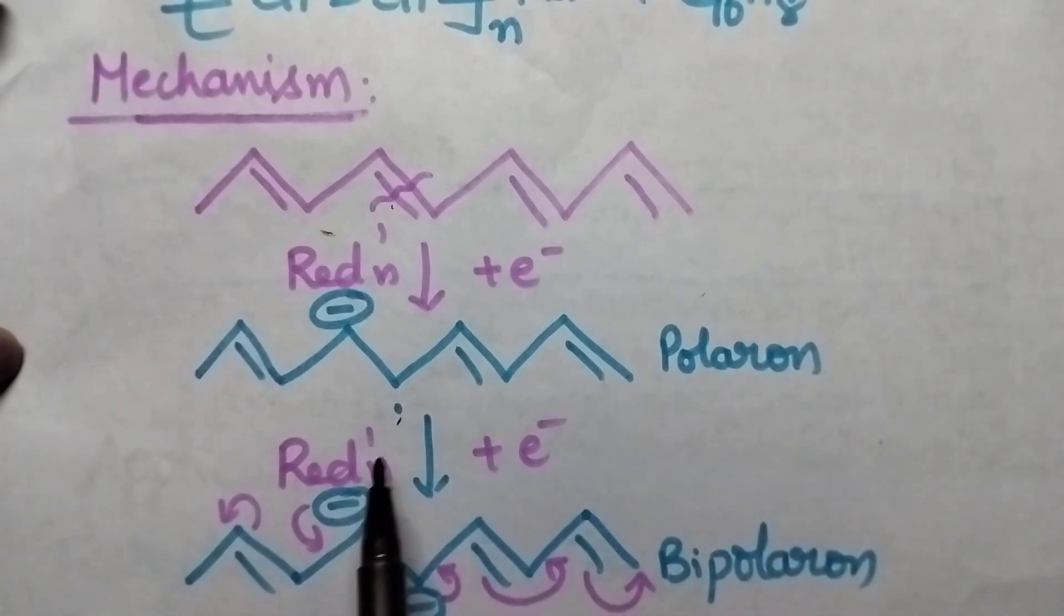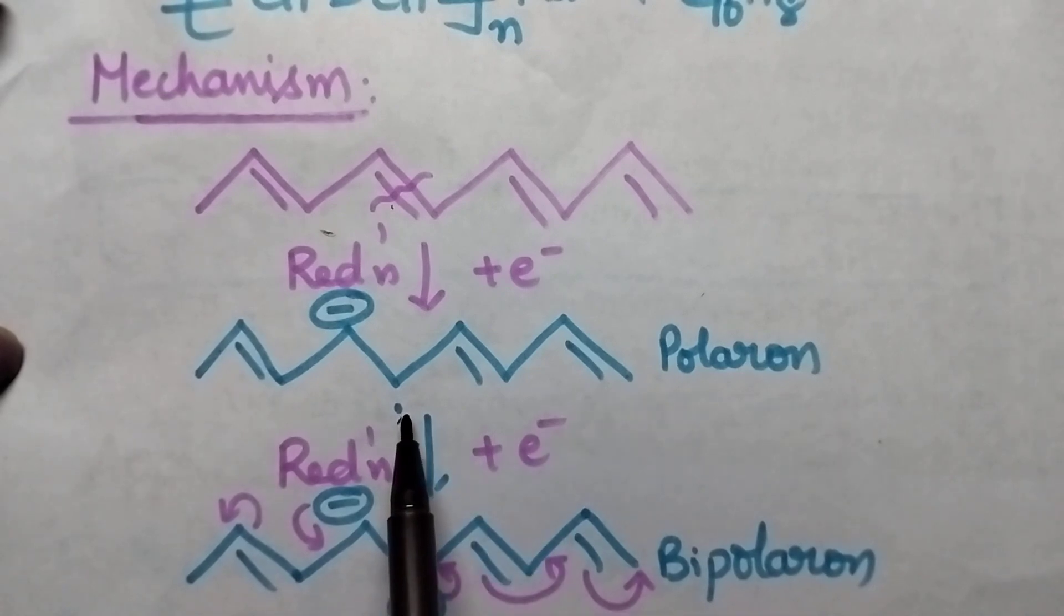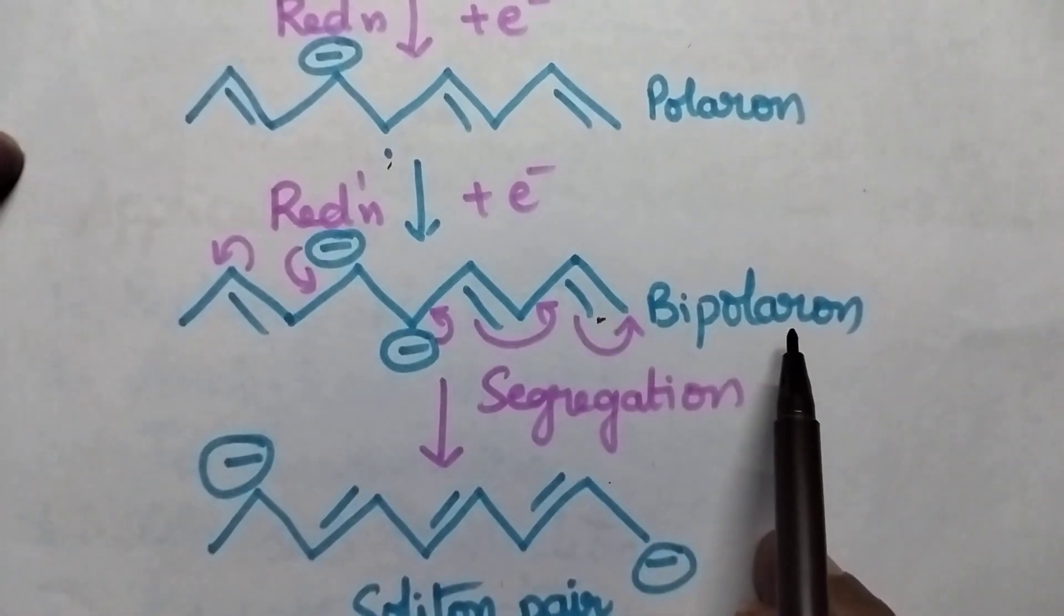In the second step also it undergoes reduction. That means again second electron will be added at the free radical. Then it results in the formation of a bipolaron.